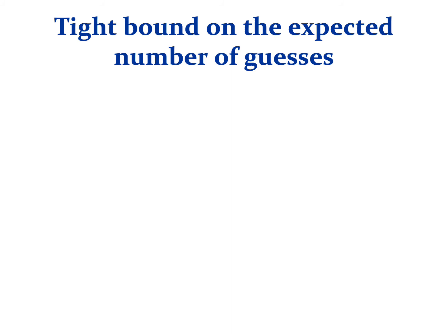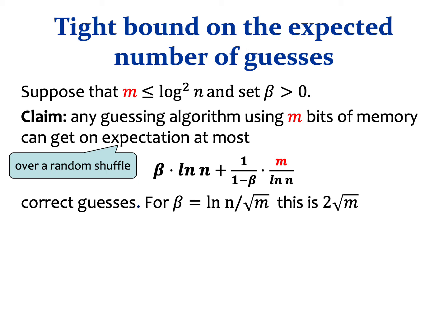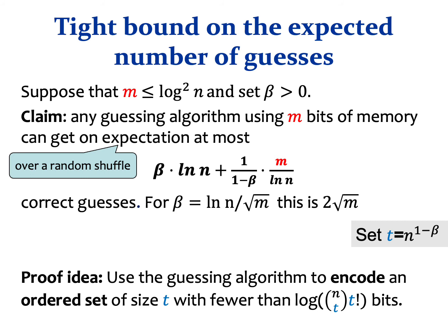Back to our proof. We would like to show that it is impossible to get close to ln n correct guesses — the optimum — with little-o of log squared n bits of memory. In other words, we want to show that our guessers are optimal and it is impossible to perform similarly with significantly less memory. Let m be smaller than log squared n and set beta to be a fraction. We claim that any guessing algorithm using m bits of memory can get at most that many correct guesses in expectation, where the expectation is taken over the random shuffle of the deck.